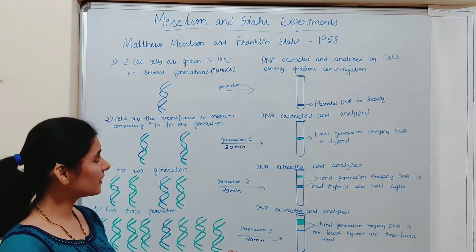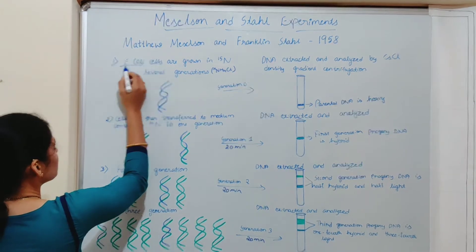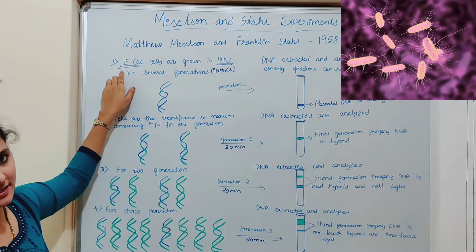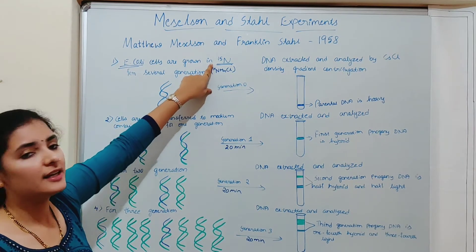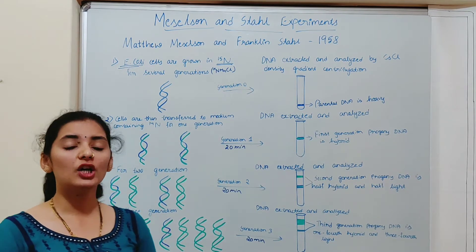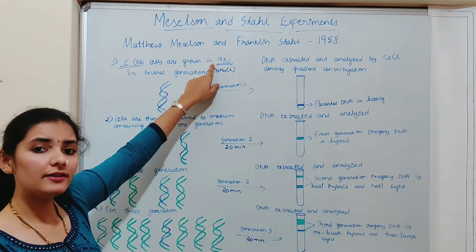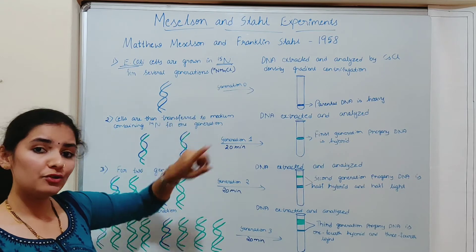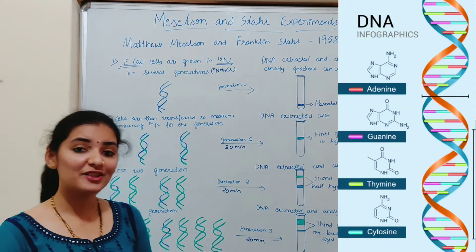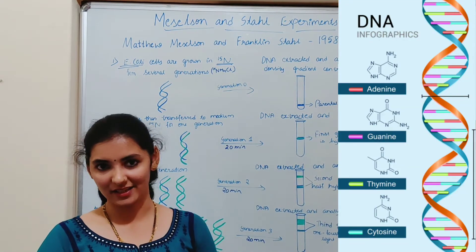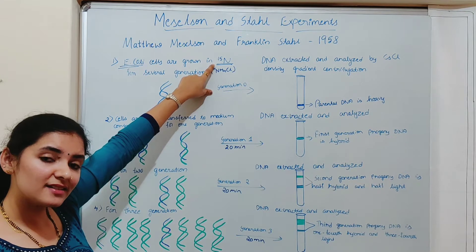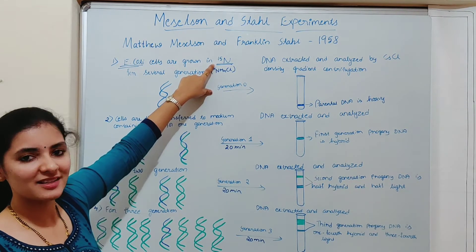Meselson and Stahl used mainly two key elements: Escherichia coli and N15. They used E. coli as a model organism in this experiment. N15 is a heavy isotope of nitrogen. Normal nitrogen is N14, and N15 is heavier when compared to N14. They specifically used the heavy isotope of nitrogen because nitrogen is a very important constituent of DNA — it is present in nitrogenous bases.